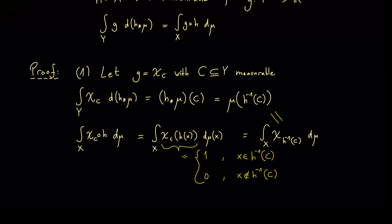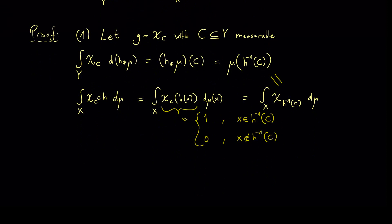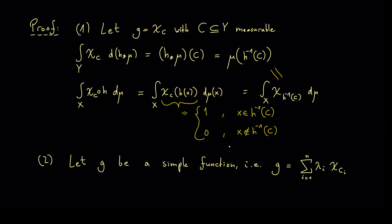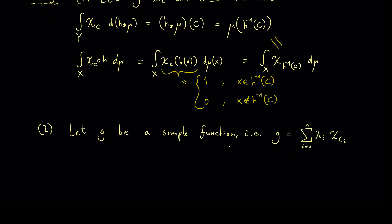Now we have proven the substitution rule for characteristic functions. And in the second case we go over to simple functions. This means that our function g is now a linear combination of characteristic functions. Hence we can write it as a sum i=1 till n where we have coefficients lambda i and sets ci. Ok so in this case you may immediately see that we can just use the first case and the linearity of the integral.